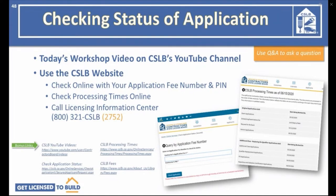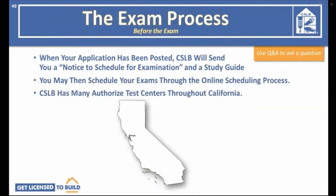Once you have submitted your application, you can check its status two ways. First, the Secured Check — you'll need your application fee number and contractor PIN number, which CSLB will send after receiving your completed application. Second, check our website for processing times, which we update weekly with the date of paperwork currently being worked on. CSLB receives hundreds if not thousands of documents every day, processed in order received. Take extra time getting the application right so we don't have to send it back to you.